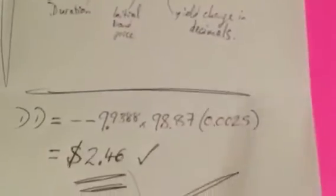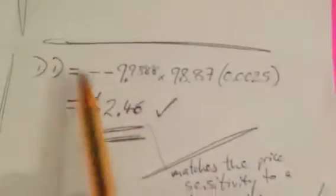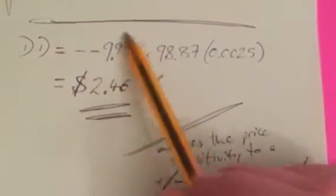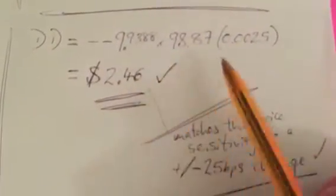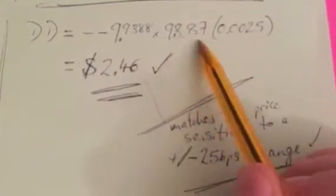So we're going to take the bond duration, which is 9.9388 years, multiplied by the original price, $98.87,